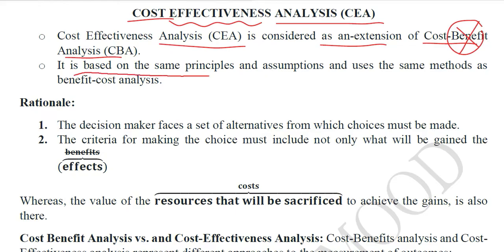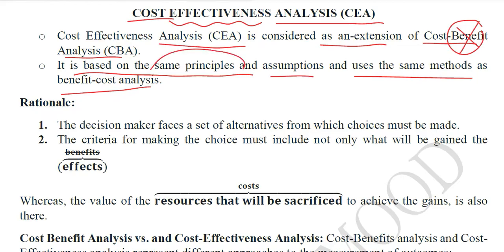CEA is based on the same principles, assumptions, and methods as cost-benefit analysis. Since it is an extension or derivative of CBA, there is no drastic difference between the two. However, they are not exactly the same — the base is the same in that we are trying to maximize the positive side or minimize the negative side.